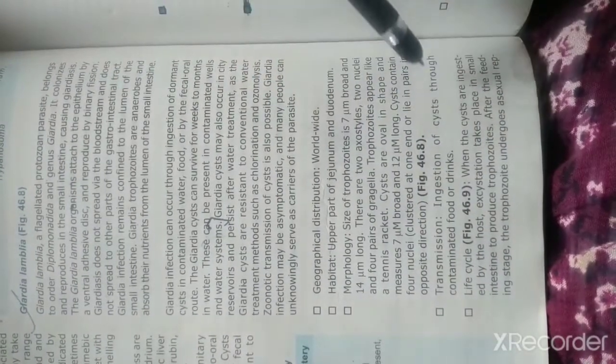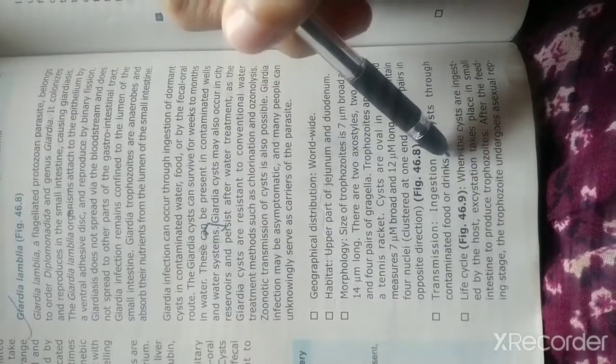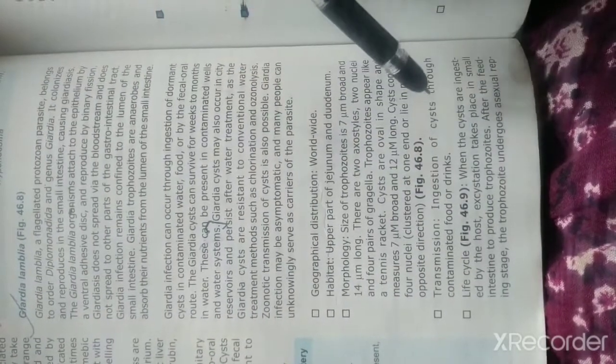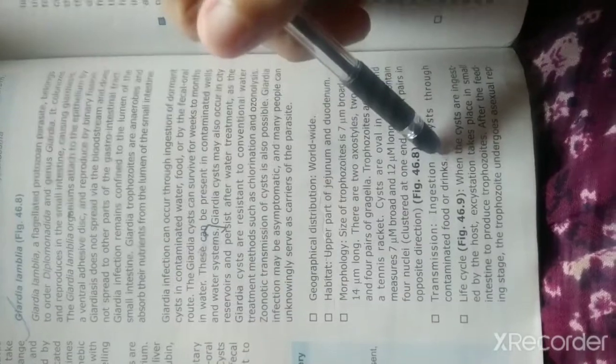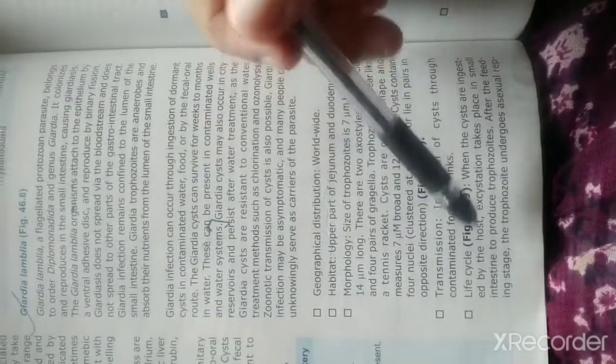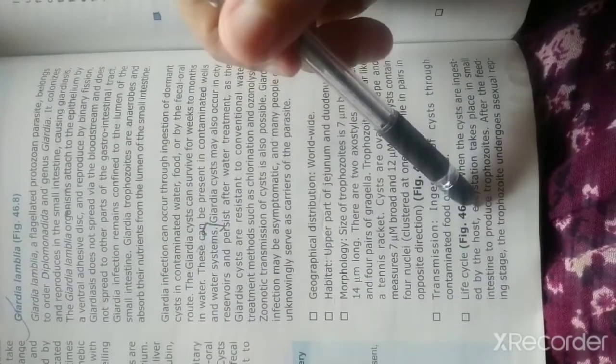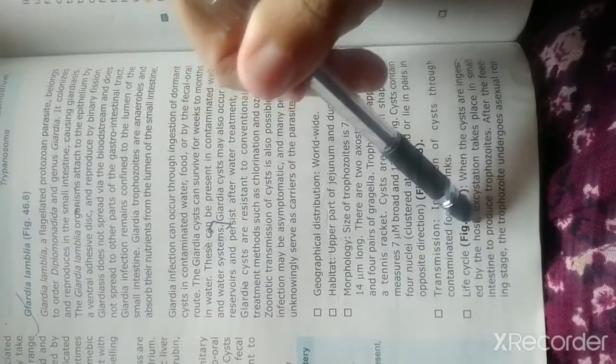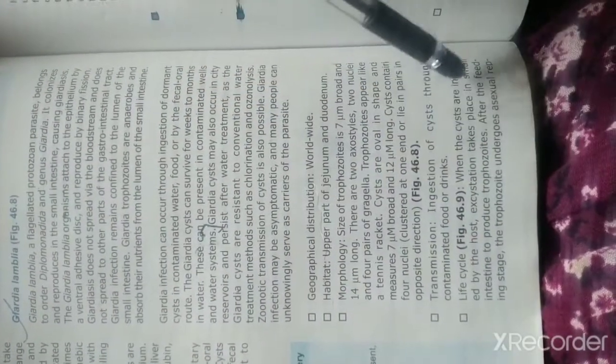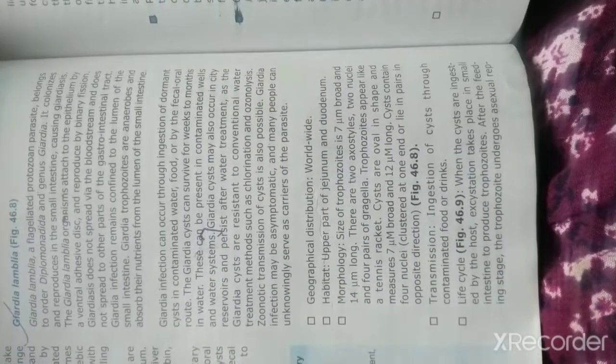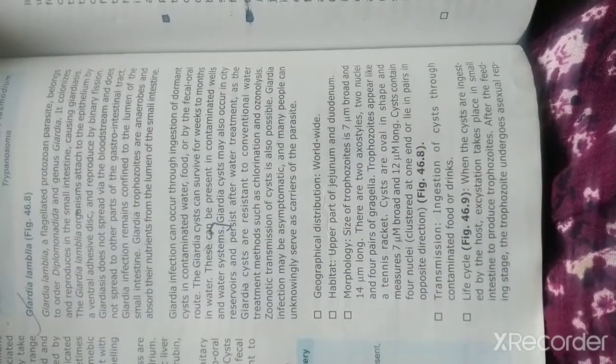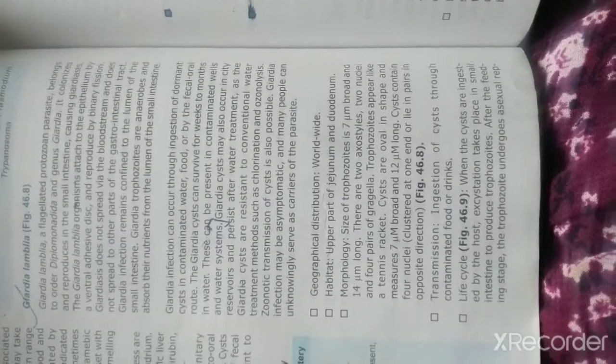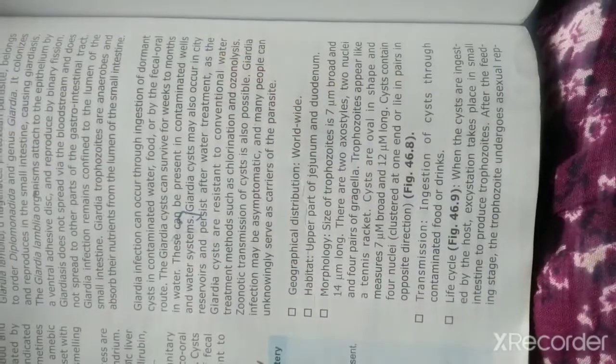Transmission is through ingestion of cysts through contaminated food or drink. When the cysts are ingested by the host, excystation takes place in the small intestine to produce trophozoites. After the feeding stage, the trophozoites undergo asexual replication.